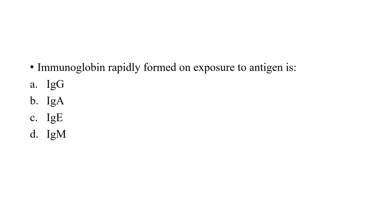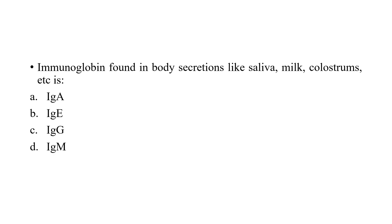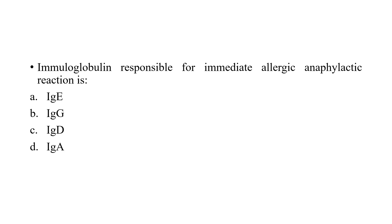Immunoglobulin rapidly formed on exposure to antigen — the answer is IgM. IgM is the first immunoglobulin produced in response to an antigen. Immunoglobulin responsible for allergic and anaphylactic reactions is IgE — IgE is responsible for immediate allergic and anaphylactic reactions.